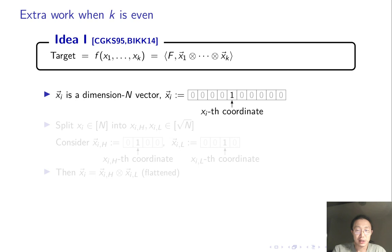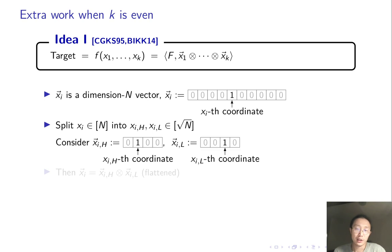As we mentioned, some extra work is needed when k is even. In previous slides, the input is converted into a length n vector. Now, we need to convert it into two length square root n vectors, and we do it in the most natural way. Split the input into two numbers, and convert the two numbers into two length square root n vectors. The tensor product of these two length square root n vectors equals the original length n vector. And the rest of the construction is mostly the same.